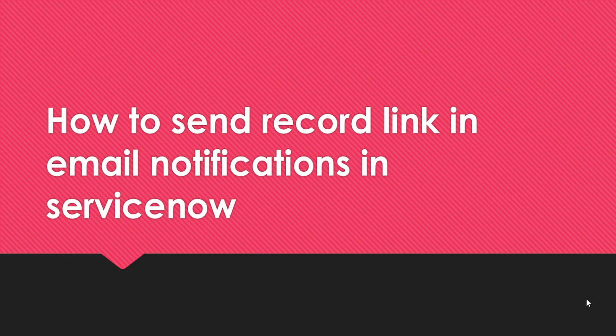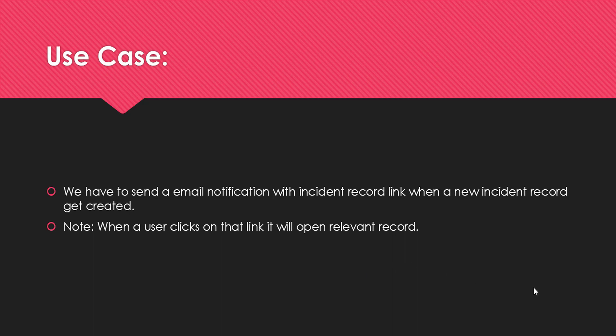So how we do this kind of requirement is what we'll see today. For implementing this, we'll take one use case: we have to send an email notification with an incident record link when a new incident record gets created, and the additional requirement is that when a user clicks on that link, it will open the relevant record.